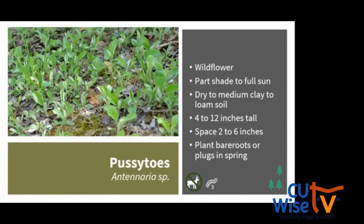One I don't hear a lot about is pussy toes — a great ground cover option. There are a couple of species: prairie pussy toes for more full sun conditions, and the shade-adapted pussy toes. They're only a couple of inches tall and grown for their ground cover foliage, though they do produce small white clusters of flowers resembling cat feet — hence the name. The flowering stalks only get 4 to 12 inches tall. Plant as bare roots or plugs, best in spring. They're typically not eaten by deer and support three species of caterpillars.